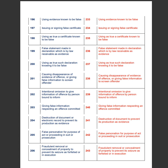Section 197 of the IPC deals with issuing or signing a false certificate, whereas Section 235 of the BNS deals with using as true a certificate known to be false. Section 199 of the IPC deals with false statement made in declaration which is by law receivable as evidence, whereas Section 236 of the BNS deals with the same. Section 200 of the IPC deals with using as true such a declaration known to be false, whereas Section 237 of the BNS deals with using as true such declaration known to be false. Section 201 of the IPC deals with causing disappearance of evidence of offense or giving false information to screen offender, whereas Section 238 of the BNS deals with the same.